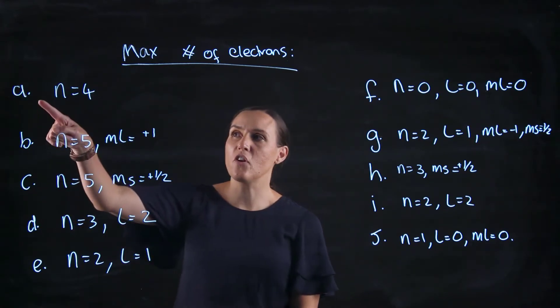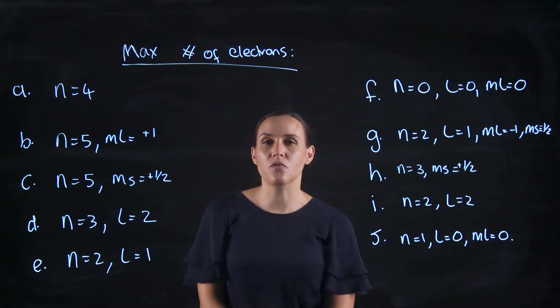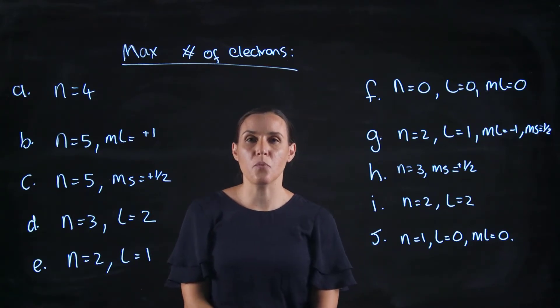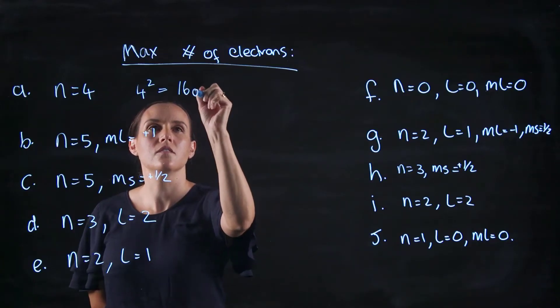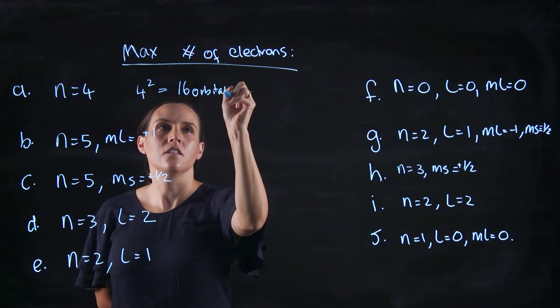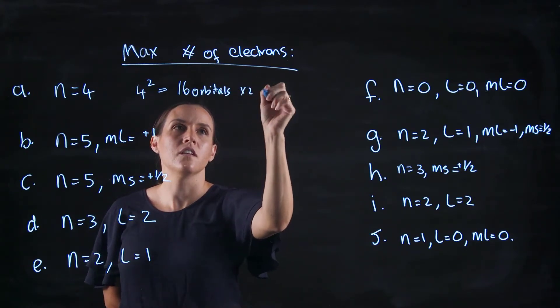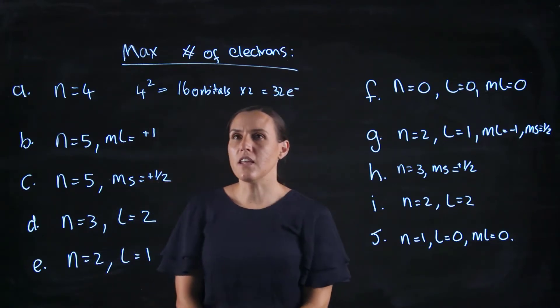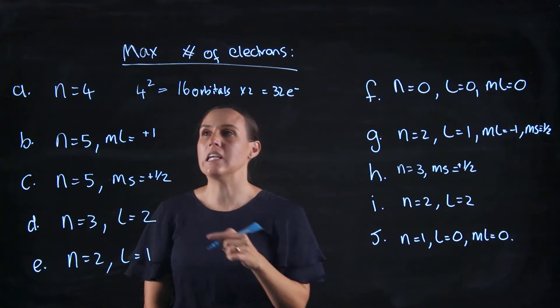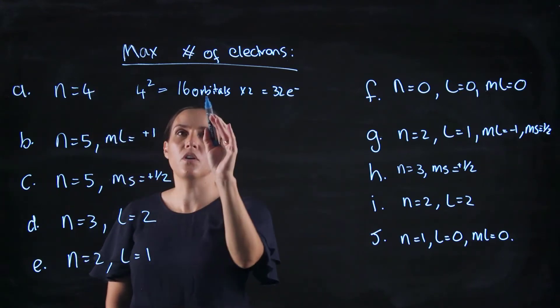So let's start here. So we've got n equals 4. The relationship between the number of orbitals and the n value is you square that n value. So the value here would be 4 squared, so 4 squared would give us 16 orbitals, and then multiply that by 2, so that gives us 32 electrons. So that one's not too bad, the thing you need to remember is n squared will give you the number of orbitals.